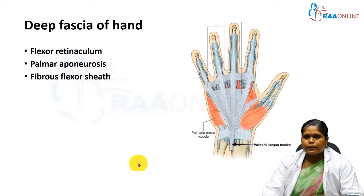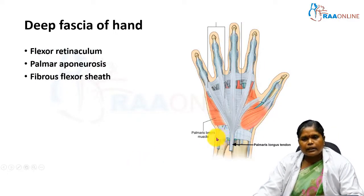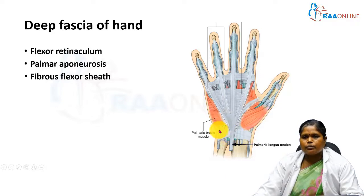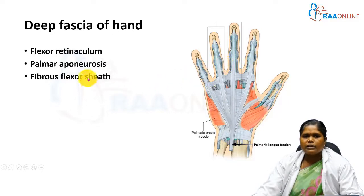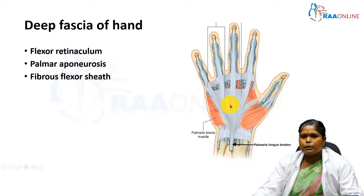The deep fascia of the hand is thickened at three places: at the wrist, it is thickened to form the flexor retinaculum, which will be covered in a separate class; over the center of the palm, it is thickened to form a triangular palmar aponeurosis; and over the digits, it is thickened to form the fibrous flexor sheath.